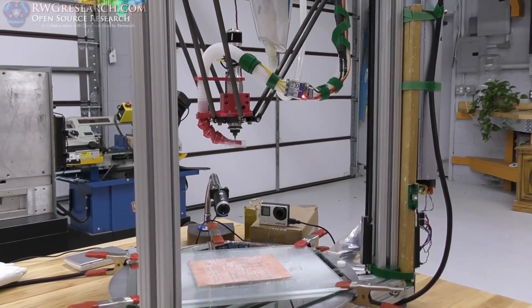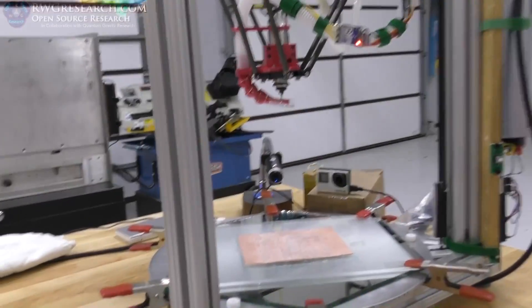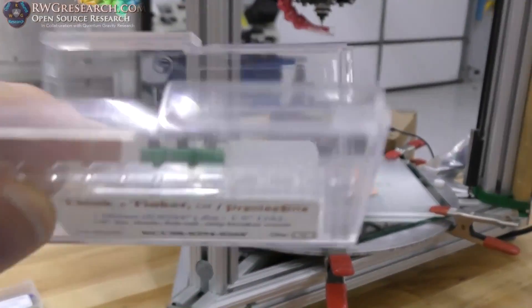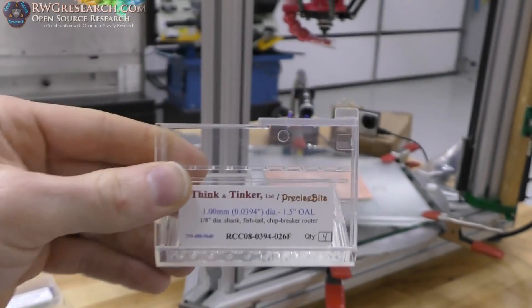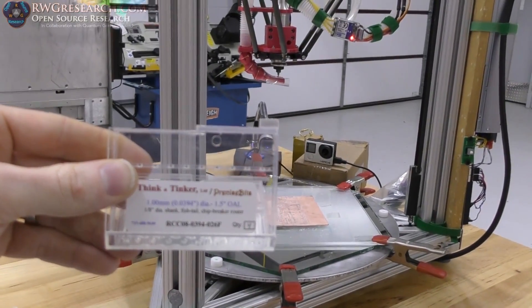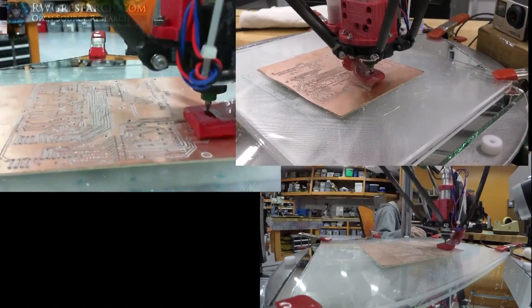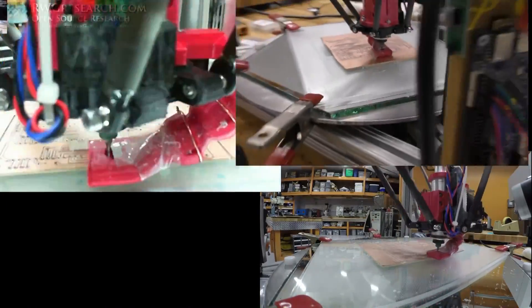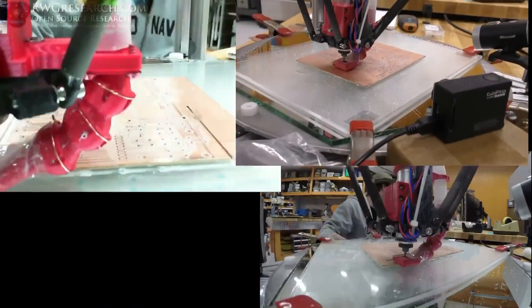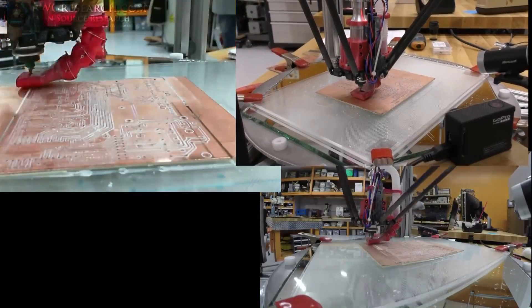I've got a .1 millimeter, no, a 2 millimeter, no, I'm sorry, a 1 millimeter burr type cutter here to cut the edge of the circuit board off. So I have no idea if this is going to work. But I think it will.